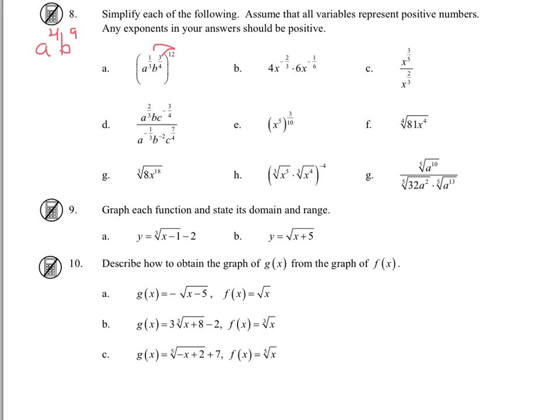In b, we're going to multiply the coefficients. We're going to add the exponents. So you have to add the fractions. You need a common denominator of 6. So this becomes -4/6 plus -1/6. So that's x to the -5/6, but we don't leave a negative exponent. The 24 stays in the numerator, and x to the 5/6 becomes your denominator.